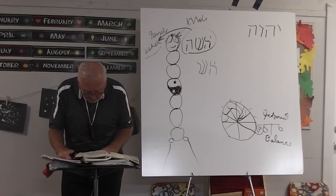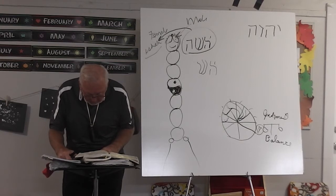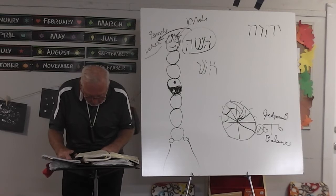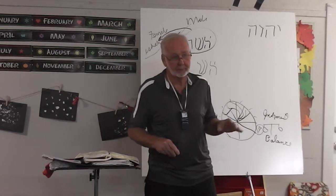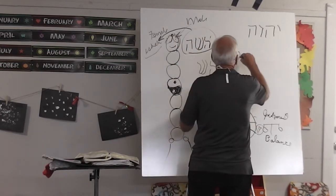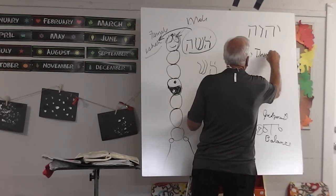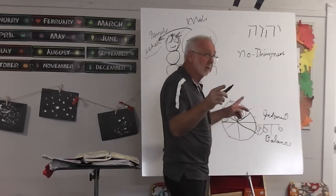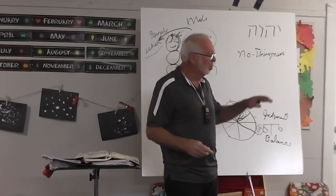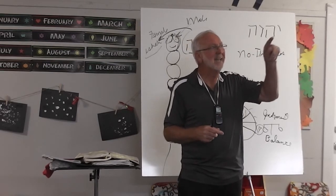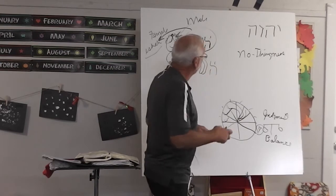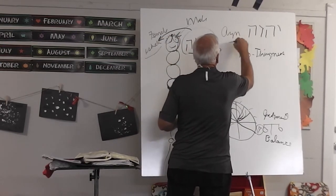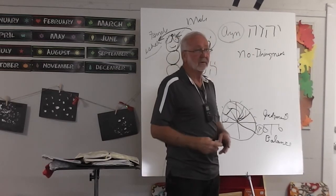Isaiah 43:5 — 'Fear not, for I am with you. I will bring your seed from the east, and gather thee from the west. I will say to the north, give up, and to the south, keep not back. Bring my sons from afar and my daughters from the ends.' That word 'ends' is absolute — the Hebrew word 'ayin,' A-Y-N — meaning 'no-thingness.' It means you can't put your finger on anything that it is, because it is everything that is. What would that be? God. The absolute, the no-thingness.